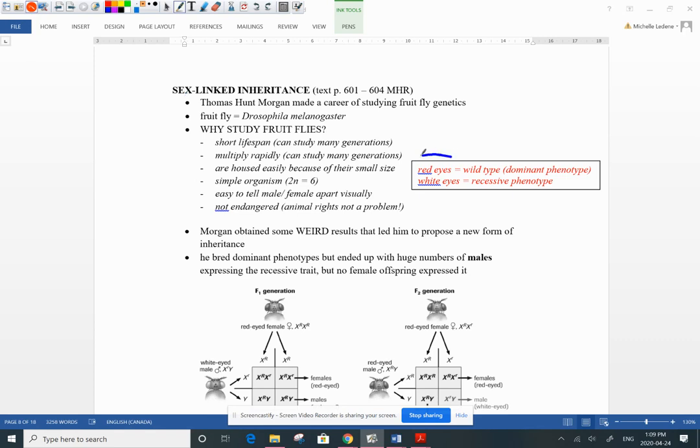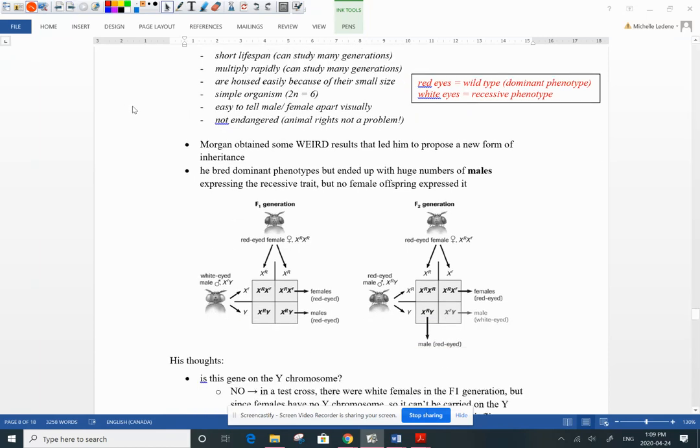So what was he investigating? The trait he was looking at was red and white eyes in fruit flies, Drosophila. The wild type, the dominant, is the red eyes, and the recessive was the little beady white eyes. So how did he come up with this new type of inheritance? Well, he got some really weird results.